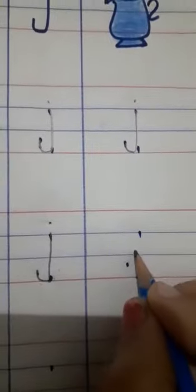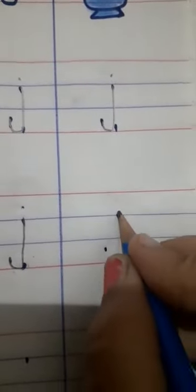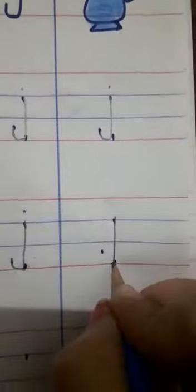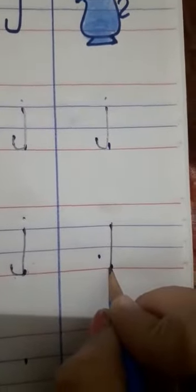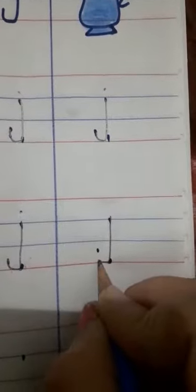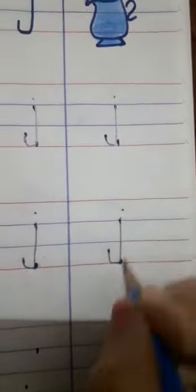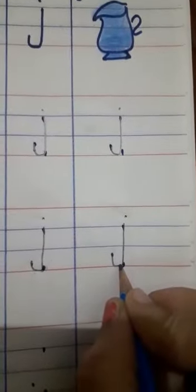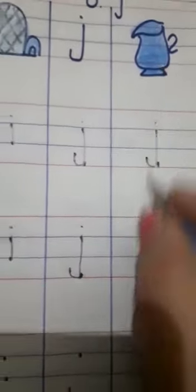Again. First write a standing line. To that standing line, write a small up curve like this, and put a dot. This is a small letter J. J for gel.